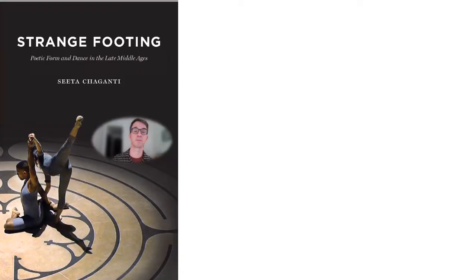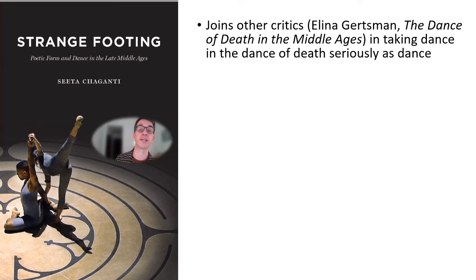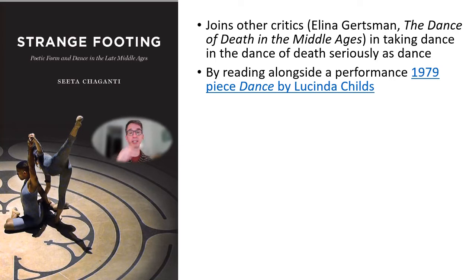There's so much more to say about this, and we'll talk about it in Monday's and Wednesday's class. But I want to talk briefly now about Sita Giganti's excellent book, Strange Footing: Poetic Form and Dance in the Late Middle Ages, which came out from the University of Chicago Press in 2018. Giganti joins other critics like Elena Gerzman in her 2010 book The Dance of Death in the Middle Ages, in taking the dance and the Dance of Death seriously as dance — not just as a metaphor, but as something that involves bodies moving around in space. She does this by looking at a 1979 dance performance called Dance by Lucinda Childs, and I'll show you an excerpt from that on the next and final slide.